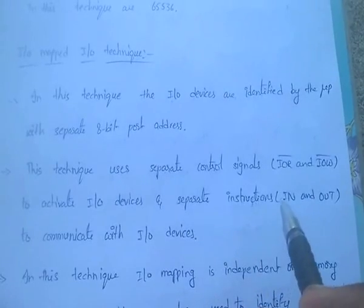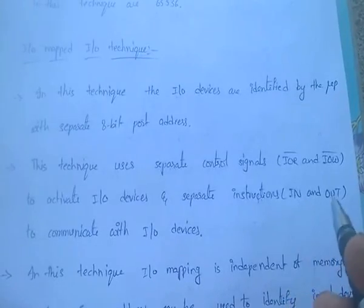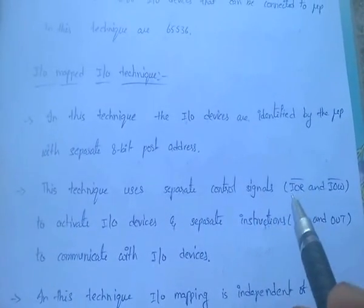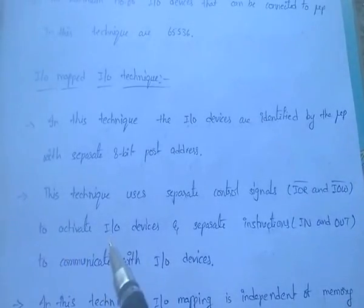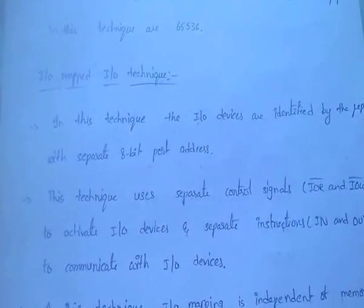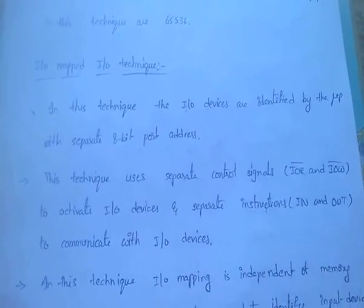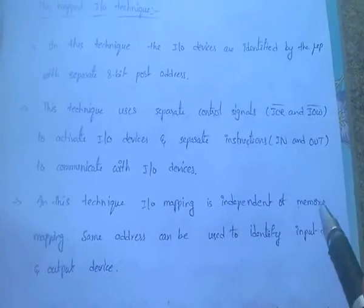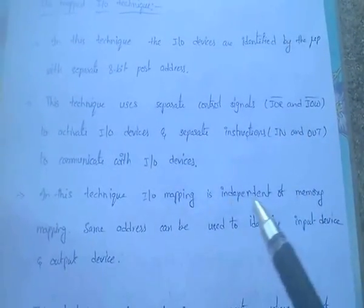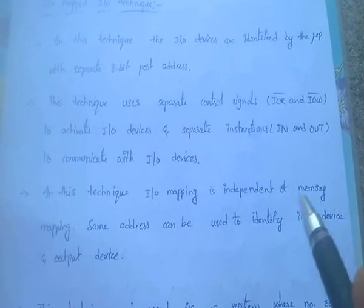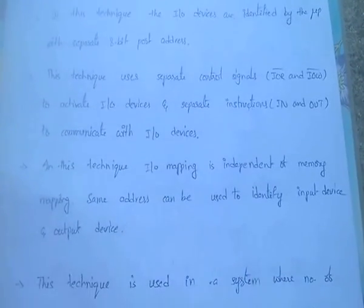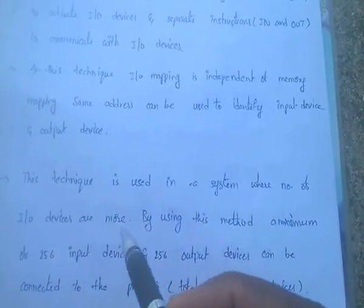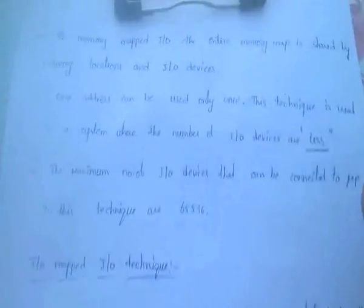Separate instructions are used to communicate with the I/O devices. These separate instructions are IN and OUT. In this I/O mapped I/O technique, I/O mapping is independent of memory mapping. The same address can be used to identify input device and output device. This technique is used in a system where the number of I/O devices are more.